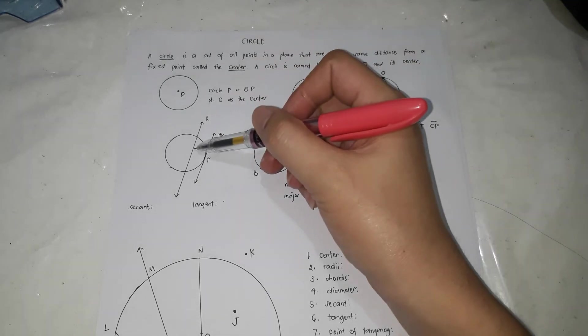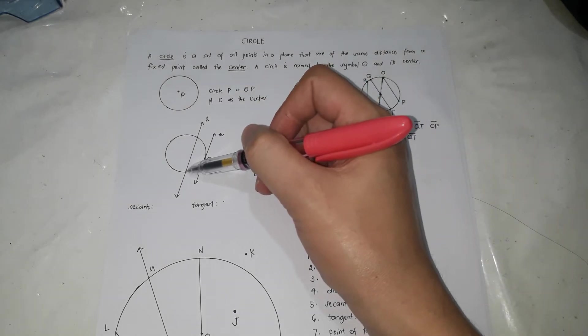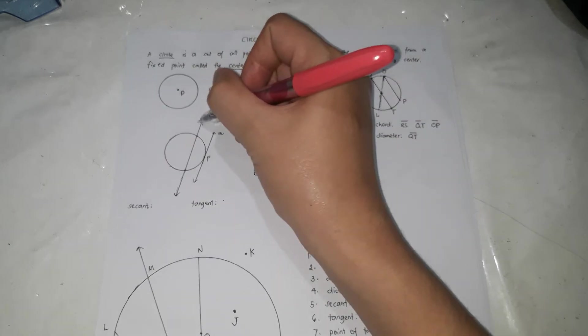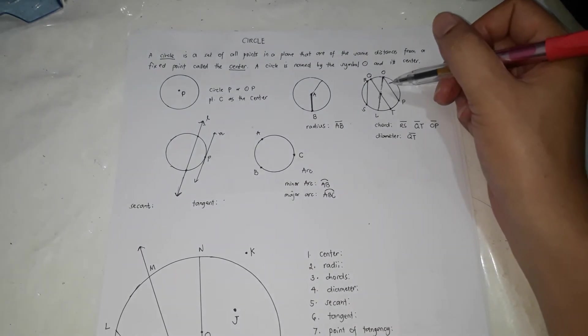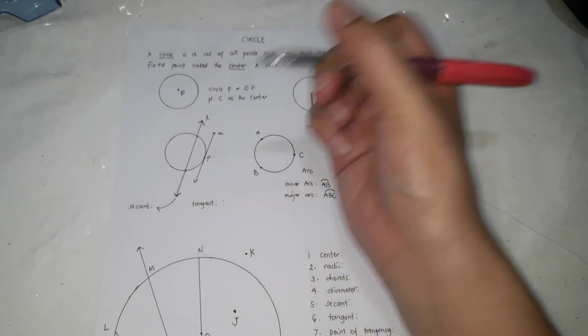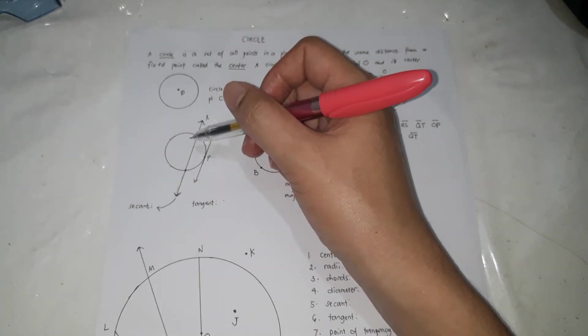Next, this one. The difference from a chord is it passes through here, but it doesn't end there. It extends further. In the end, it is a line. If there's an arrow, that's called a line. If there's no arrow, it's a line segment only. So this one is called a secant. A secant is a line which passes through two points on the circle.